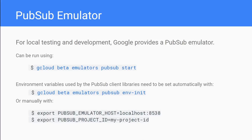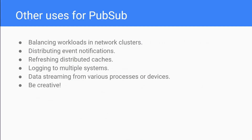PubSub has a load of different uses beyond data pipelines - it can be used for balancing workloads in network clusters, distributing event notifications, refreshing distributed caches, logging for multiple systems, and data streaming from various processes or devices. You can be quite creative with Google PubSub - at a hackathon a few months ago we used it to post something from one computer and have a continuous integration server listen and react accordingly. It's quite flexible.